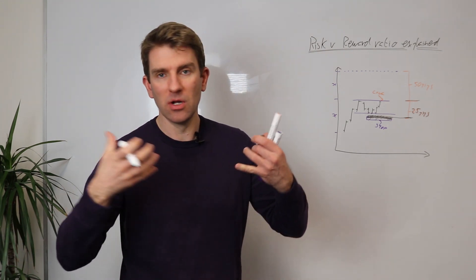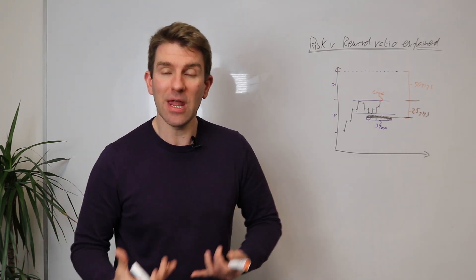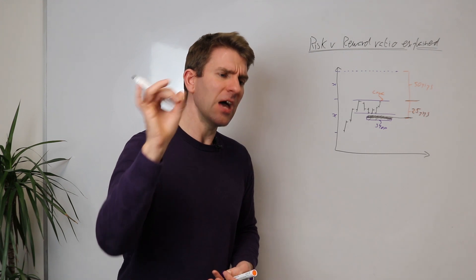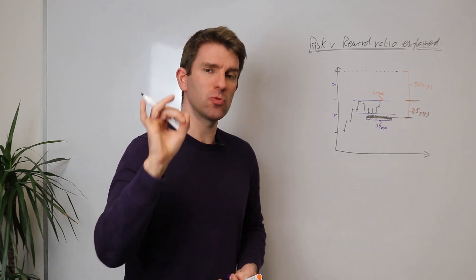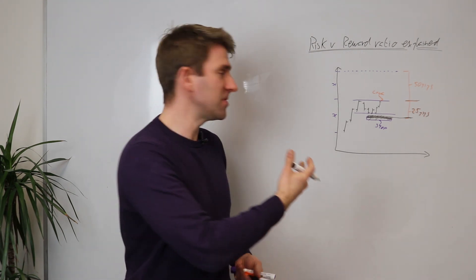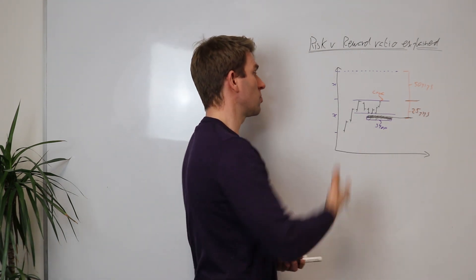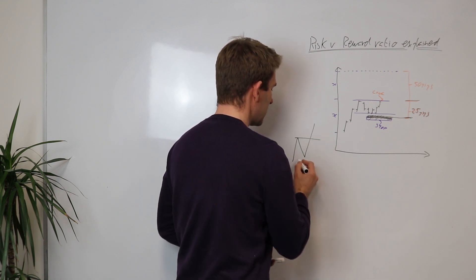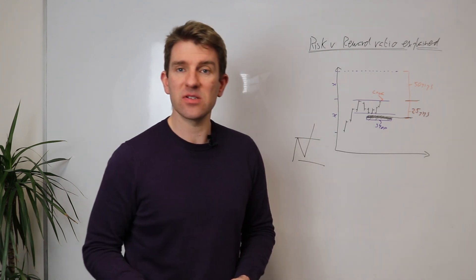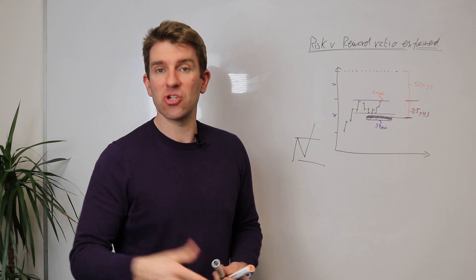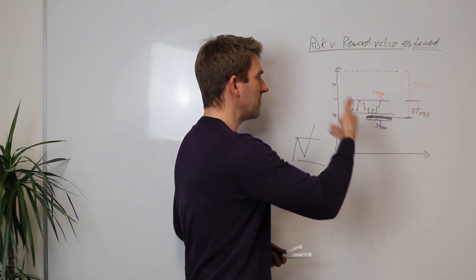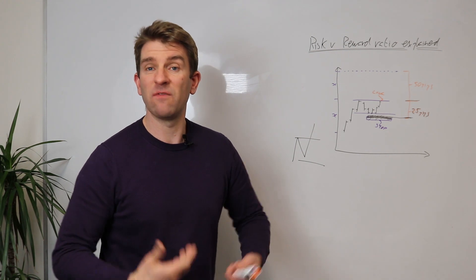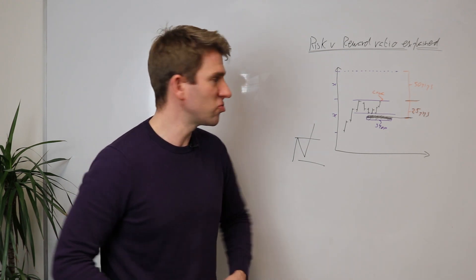The stop should be positioned based on a technical level, or better yet, where the trade is no longer valid. In this particular instance with the one-two-three pattern, stops below the low is pretty standardized stuff in the right conditions. Stop is 25 pips — if it goes back below that low, the pattern is no longer valid and I don't want to be in the trade.